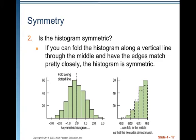A bimodal histogram has two apparent peaks — we can see there are two here, one between 70 and 110 and one between 110 and 150. A histogram that doesn't appear to have any mode and in which all the bars are approximately the same height is called uniform. Symmetry: if you can fold the histogram along a vertical line through the middle and have the edges match pretty closely, the histogram is symmetric. The histogram on the left is symmetric; the one on the right cannot be folded in the middle so that the two sides match, so it's not symmetric.